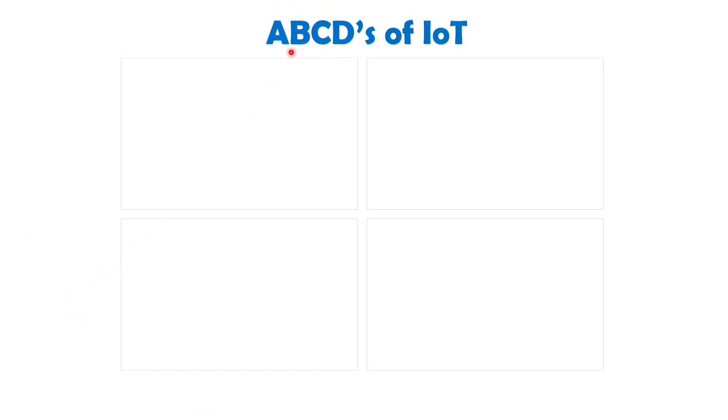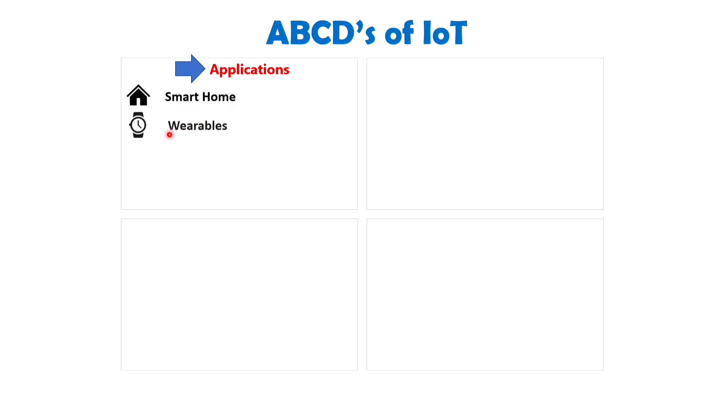Let's now explore the key components of an IoT system, represented by the A, B, C, Ds. These four pillars are fundamental to any IoT system's architecture. First, A stands for Applications. We have already touched upon various applications earlier, such as smart homes, wearable devices, smart cities, smart retail, and many more. These applications utilize IoT to accomplish specific tasks and goals.